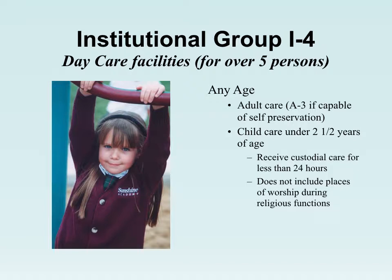There is actually a fourth institutional category: I-4. After-school daycare with older kids that can self-evacuate is classified as E. But if children are under two and a half years of age — infants who can't self-evacuate — or if it's adult daycare where participants are not capable of self-preservation, it's I-4. If adults are capable of self-preservation and are simply gathering to socialize, it's an A-3.